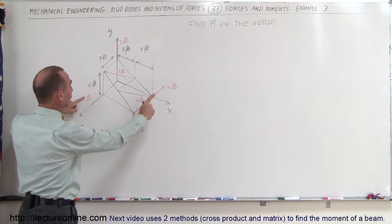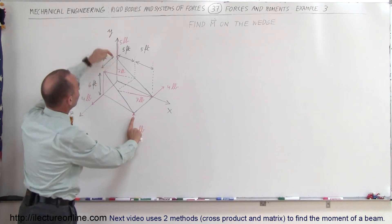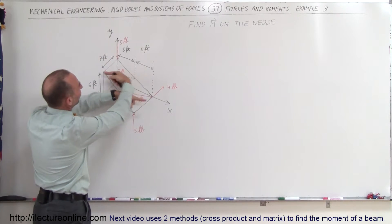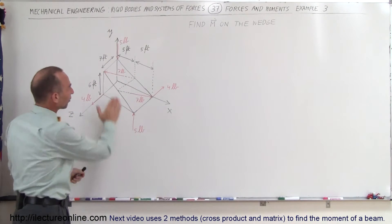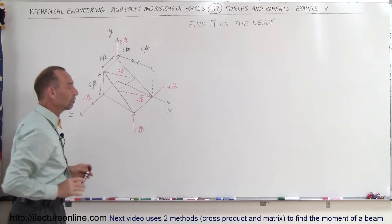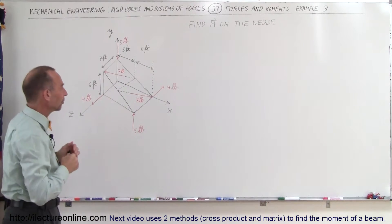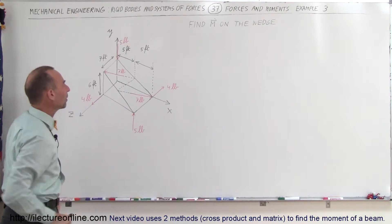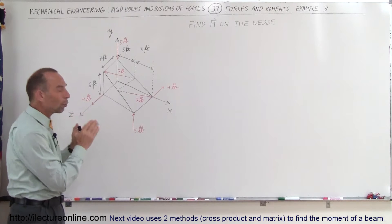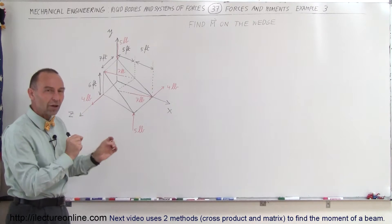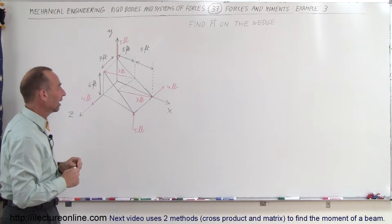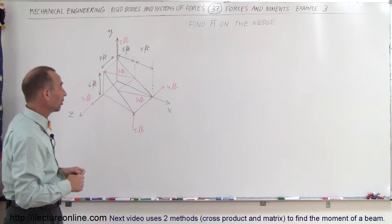Notice there are three couples: two 4-pound forces, two 5-pound forces, and two 7-pound forces in this direction on the surface of the wedge. We're trying to find the total moment caused by those six forces — those three couples. The reason we chose this problem is because it is very difficult sometimes to see the orientation of the moments caused by these couples, especially when they're diagonal across a wedge like this.